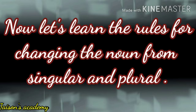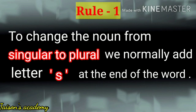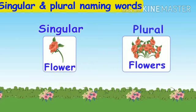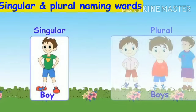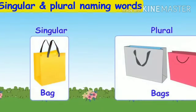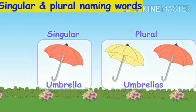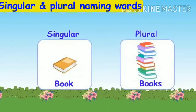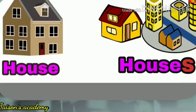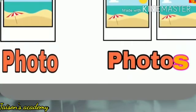Now let's learn the rules for changing a noun from singular to plural. Rule number 1: to change a noun from singular to plural, we normally add the letter S at the end of the word. For example: flower/flowers, pencil/pencils, girl/girls, boy/boys, bag/bags, umbrella/umbrellas, star/stars, toy/toys, book/books, kite/kites, house/houses, cat/cats, tree/trees, photo/photos, ball/balls.